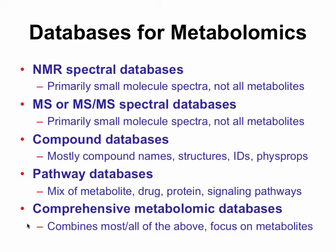There are spectral databases, which are crucial, and you've seen how they're used in your exercises. There are compound databases that allow you to associate a compound name, molecular formula, or mass to identify compounds. There are pathway databases that let you go from a compound list to biological interpretation. And comprehensive metabolomic databases combine spectral, compound, and pathway databases with descriptions and details — usually focused on a specific organism, though some cover multiple organisms.